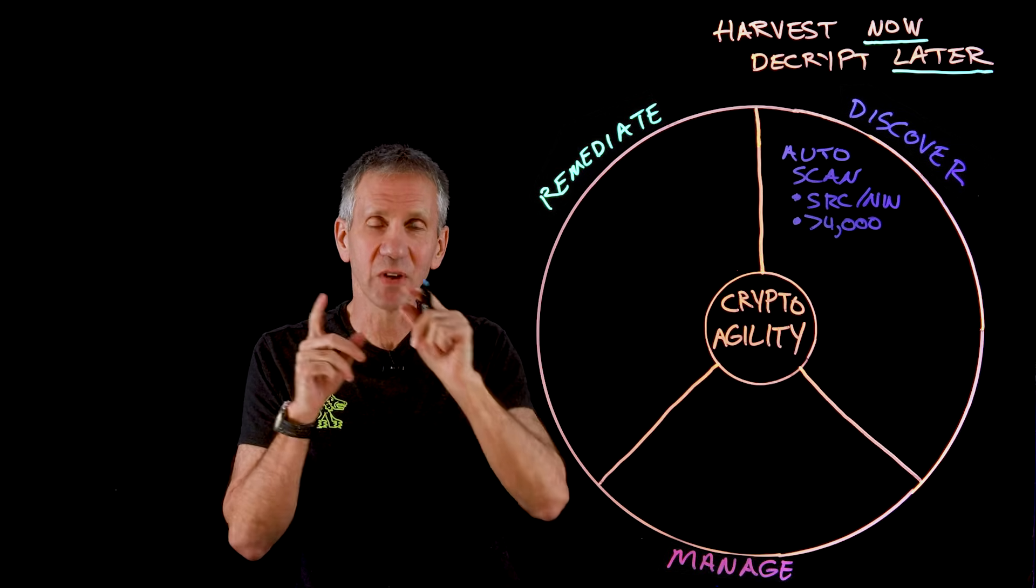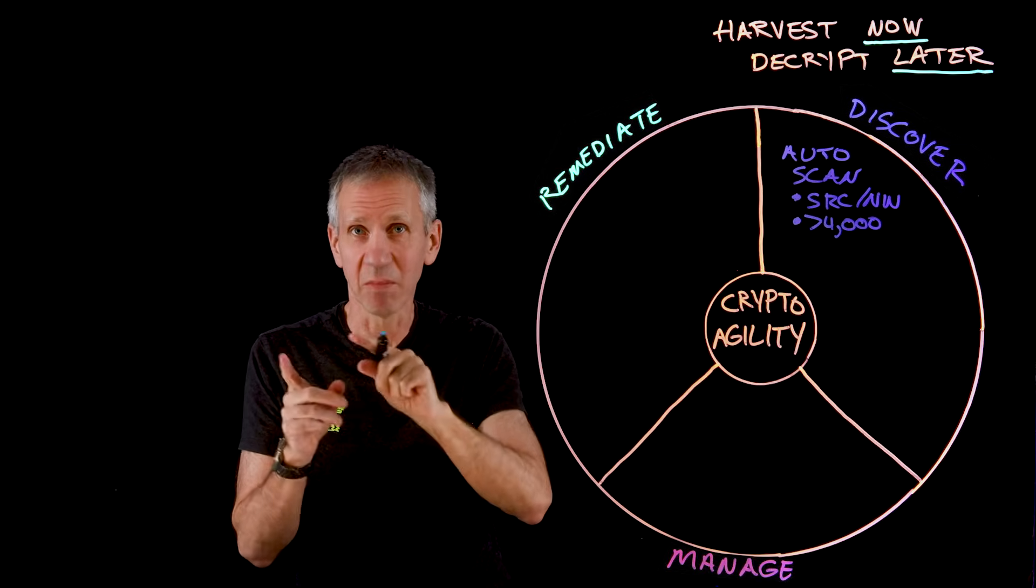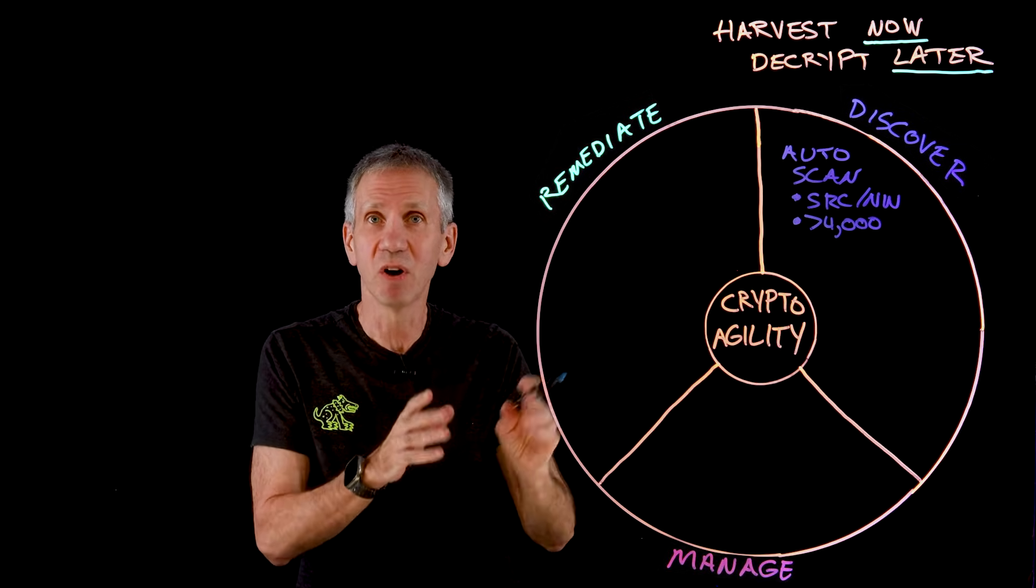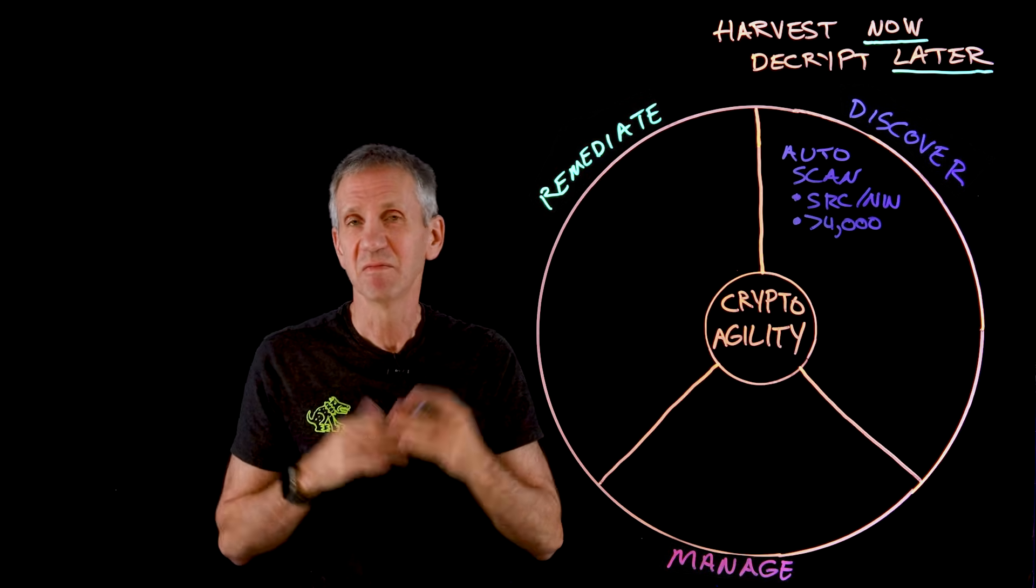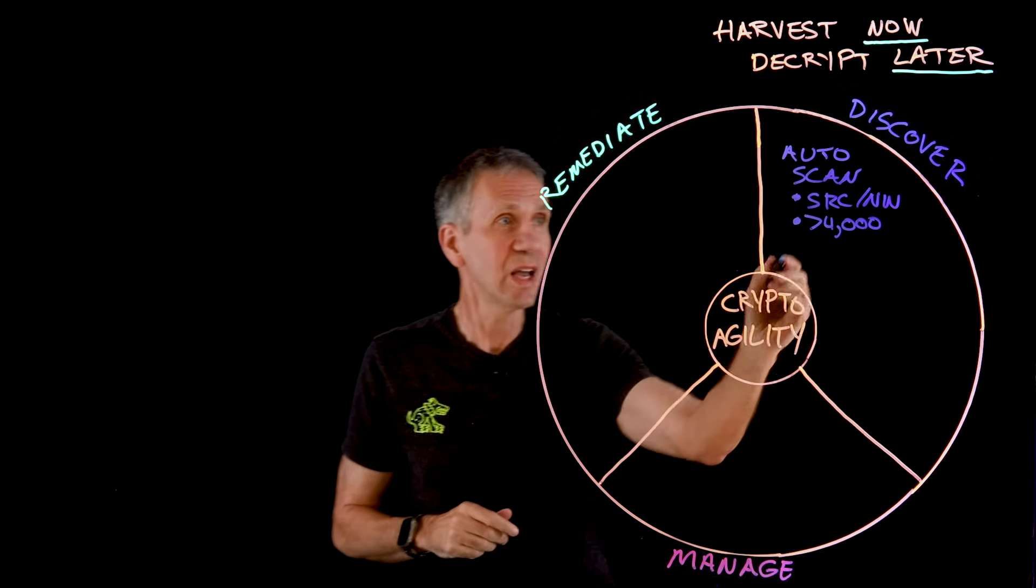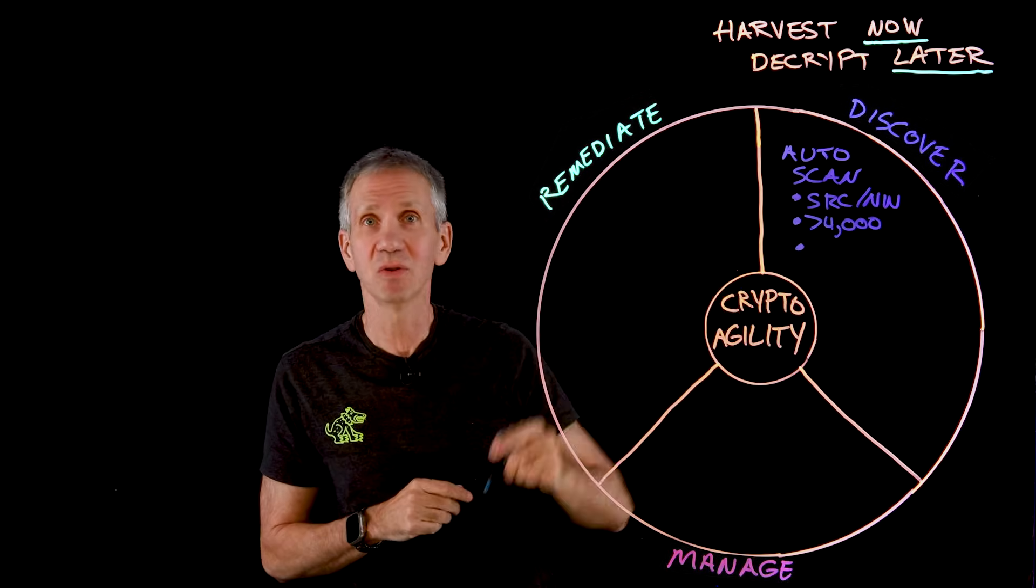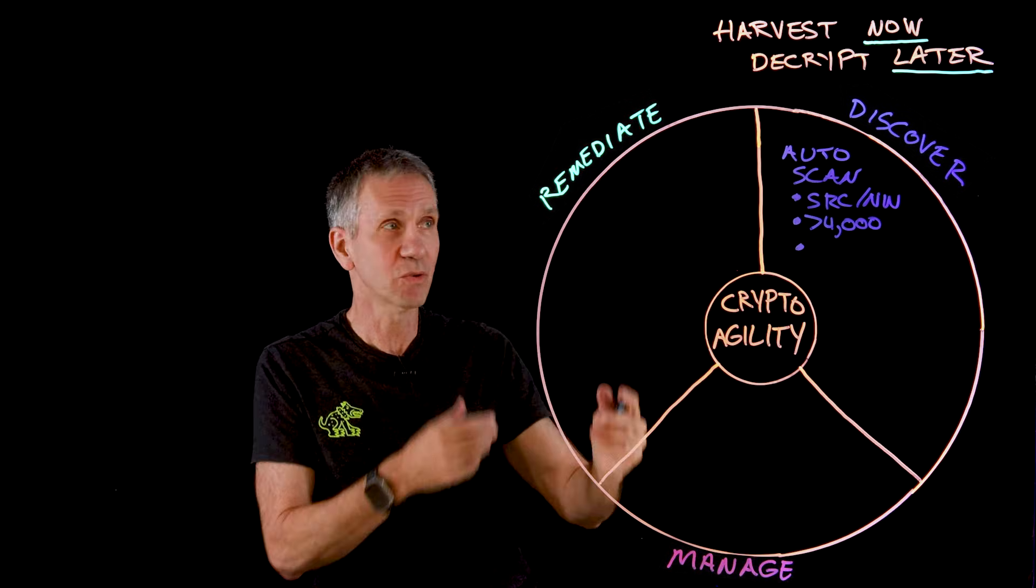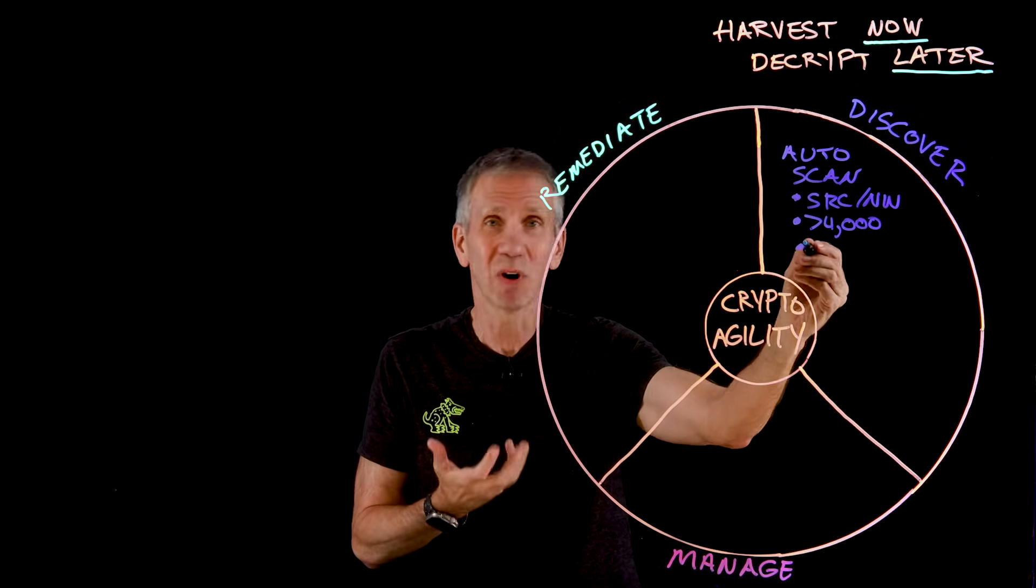Stop and think for just a second. If they did a conversion, a migration of every one of those, let's say they could do one a day. That actually would be pretty aggressive. If they did one a day, how long is it going to take them to get to full blown crypto agility and crypto safe, quantum safe?